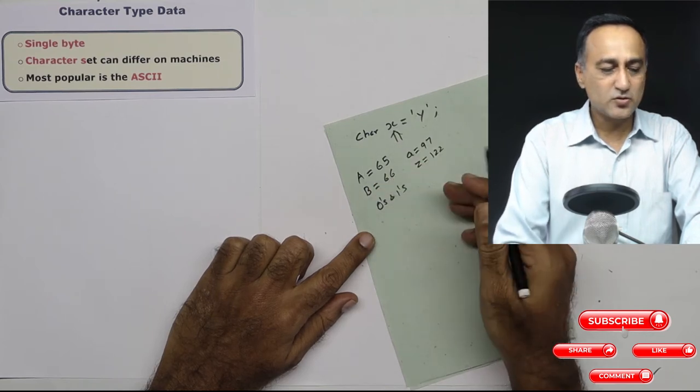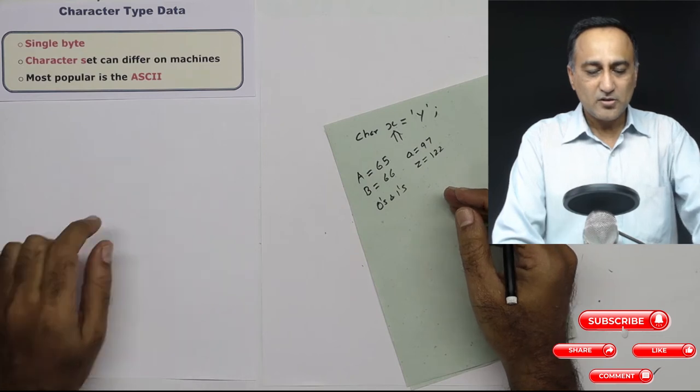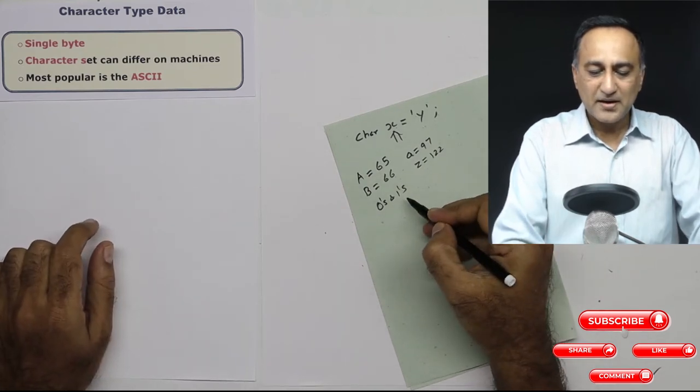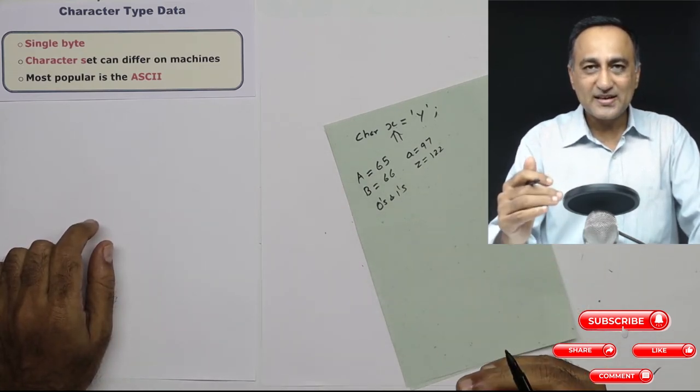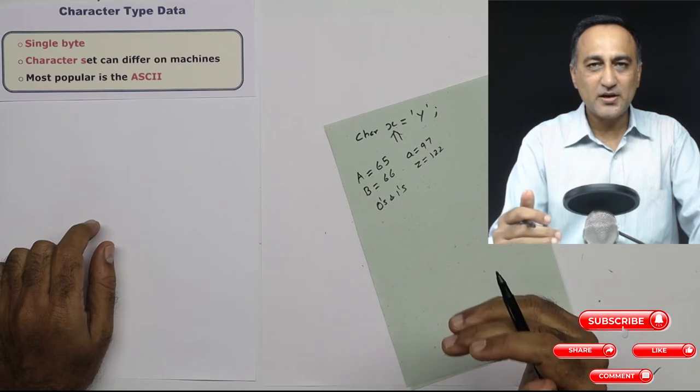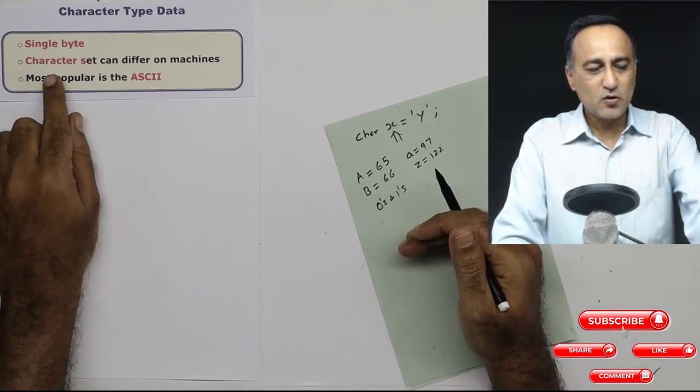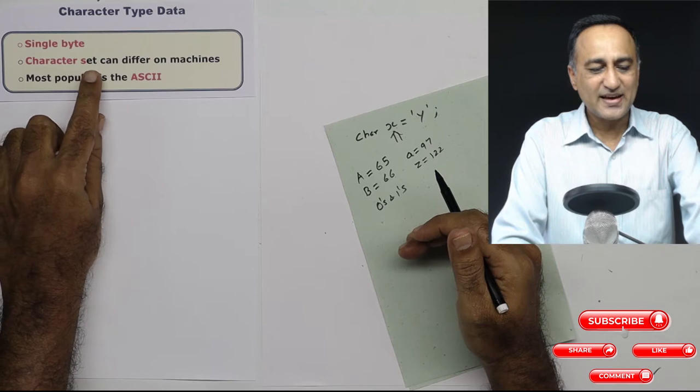Similarly, 66 is used to represent B. Using a binary code to represent the actual characters on the keyboard in terms of ones and zeros is called as a representation using a character set.